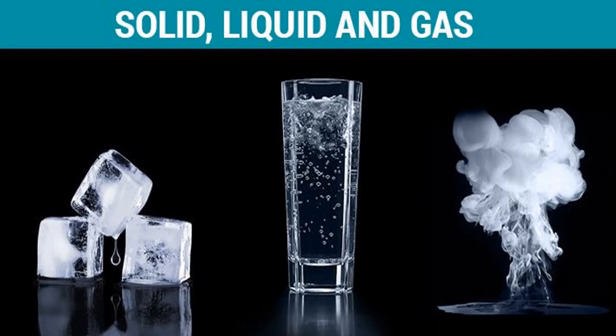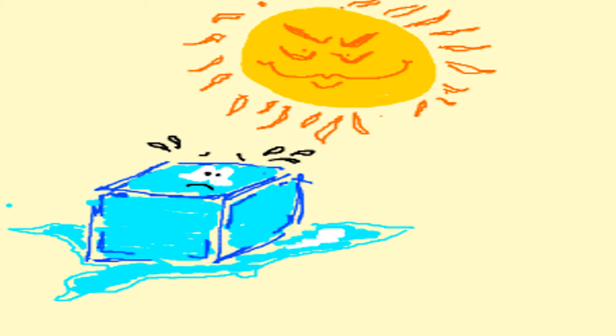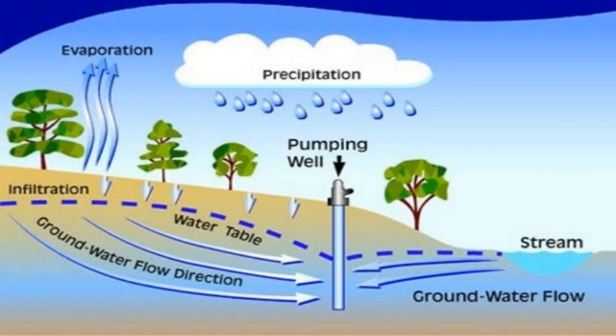Earth's water is always in constant movement. The natural cycle, also known as the hydraulic cycle, describes the continuous movement of water on, above, and below the surface of the Earth. Water is always changing states between liquid, vapor, and ice, with these processes happening in the blink of an eye and over millions of years. The sun plays an important role in the water cycle, acting as a driving force as it melts ice and liquid water into vapor.